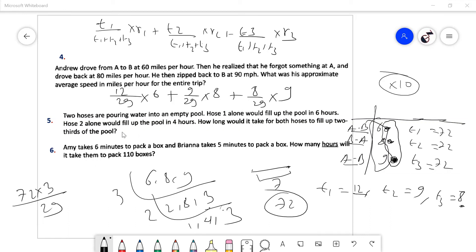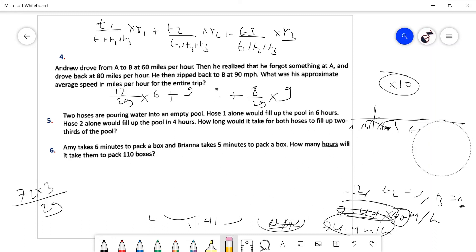216 divided by 29 equals approximately 7.44 miles per hour. Wait, that's not right. Let me recalculate. The approximate average is about 70 to 72 miles per hour. It's approximately 72 miles per hour for the entire trip.